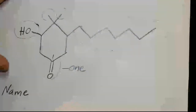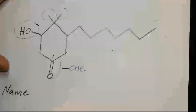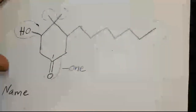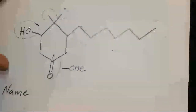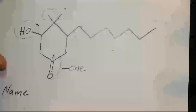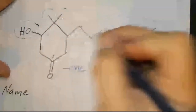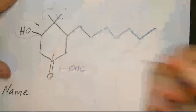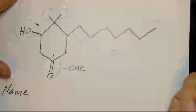That rule — starting numbering at the primary functional group — only applies to cyclic structures. On a linear structure, you start your numbering from one end of the longest chain you've determined to be the parent or the other end, even if the primary functional group is somewhere in the middle. In the cyclic case, though, you always start the one on the primary functional group.